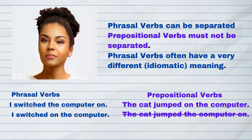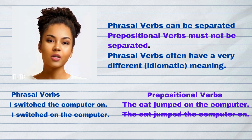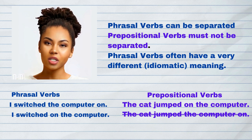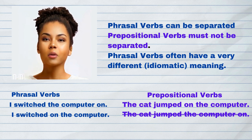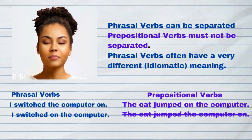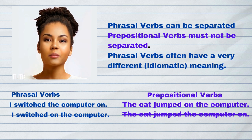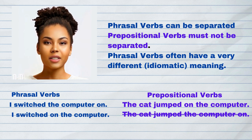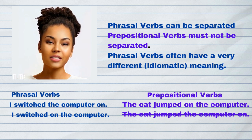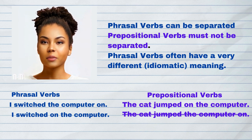Phrasal verbs examples: I switched the computer on. I switched on the computer. Remember, prepositional verbs: The cat jumped on the computer. The cat jumped the computer on — this sentence is incorrect because you cannot separate a prepositional verb.